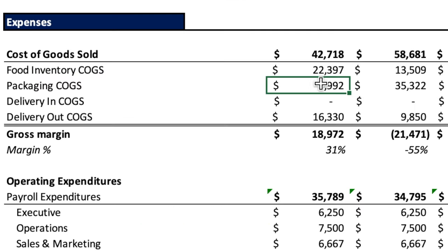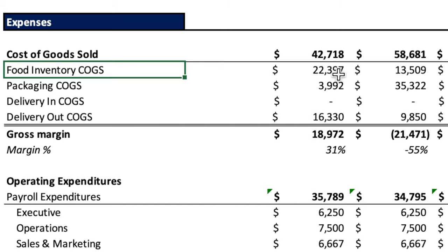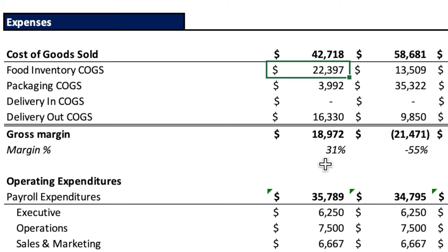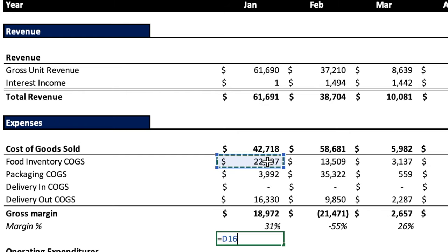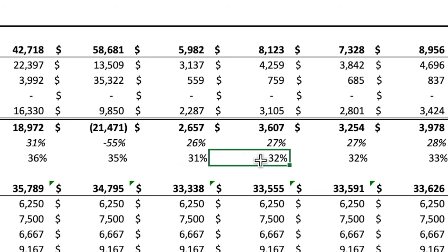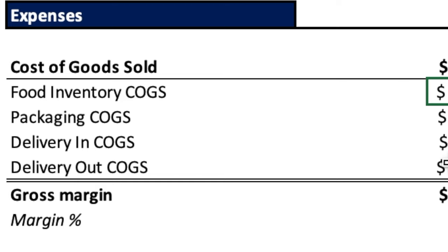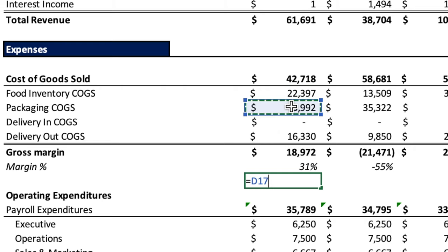Something is definitely wrong with the items being recorded in cost of goods sold. Looking at food inventory COGS individually — you can create a formula to see if it fluctuates in the same direction as revenue. Dividing by revenue: 36%, 35%, 31%, 32% — it trends nicely with revenue. This indicates the company is recording food inventory COGS in the right direction. That line looks okay.